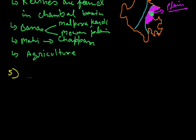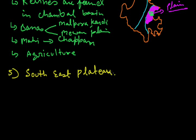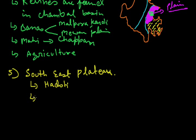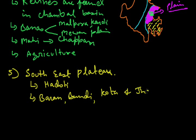Now let us come to the fifth division of Rajasthan, which is the south east plateau. The central highland plateau of India is divided into four major parts; one of them is the Malwa plateau. The Malwa plateau is divided into two parts — the southern part is called Malwa plateau, and the north eastern part is known as Haruti plateau, which comes in Rajasthan. The districts that come in this region are Bara, Boondi, Kota, and Jhalawad. Only one tehsil of Boondi comes in it.